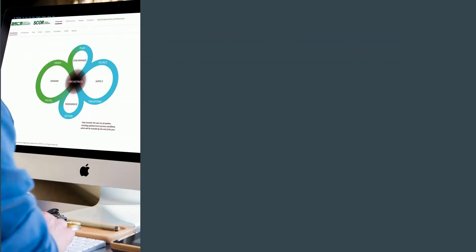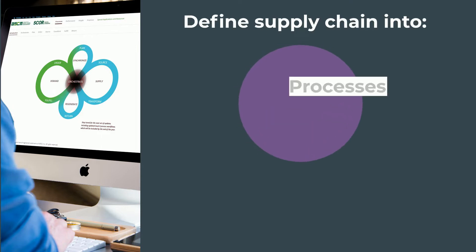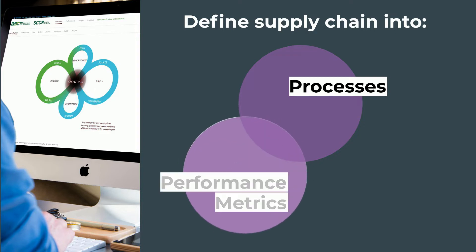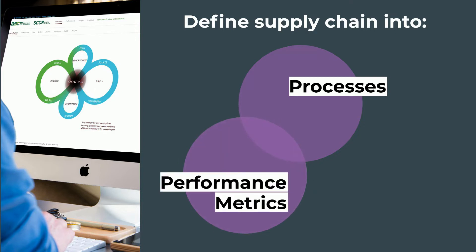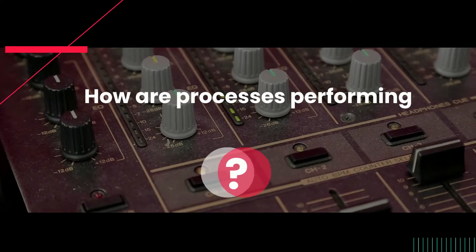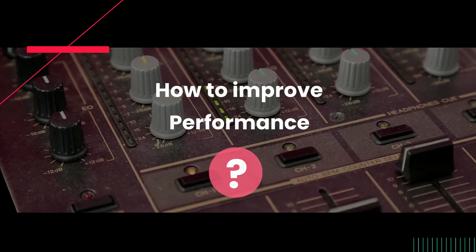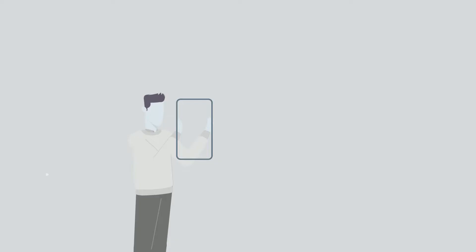The basic idea of SCOR is that you define your supply chain into industry-neutral standardized processes. Then you use those processes to measure performance using the attached metrics. These metrics will show how the processes are performing. To improve the performance, we use best practices, which are a way to gain insight into improving process performance.